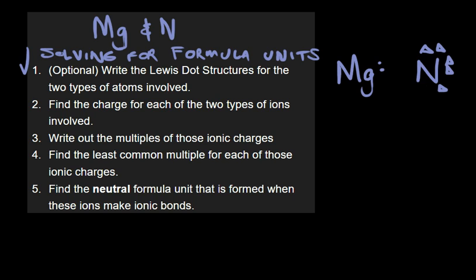The second step is going to be to find the charge for each of the two types of ions involved. To be able to find the charge, you need to know a few things about chemistry. This turns out to be two plus. For nitrogen, it turns out to be three minus. If you don't know how to do this at this point, there are a couple screencasts that I've done to help you understand how to do this. Basically,